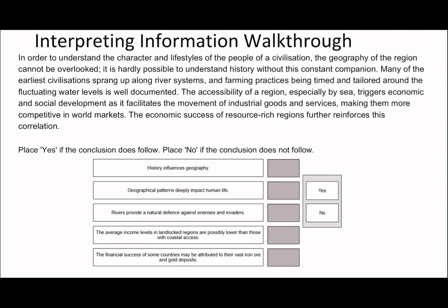So many of the earlier civilizations sprang up alongside river systems, and farming practices being timed and tailored around fluctuating water levels is well documented. The accessibility of a region, especially by sea, triggers economic and social development as it facilitates the movement of industrial goods and services, making them more competitive in world markets. The economic success of resource regions further reinforces this correlation. Overall, I'd say geography is the important idea here — things that happened in the past were because of good access to water or river systems. So I'd argue this one is no, because instead of history influencing geography, it's geography influencing history.